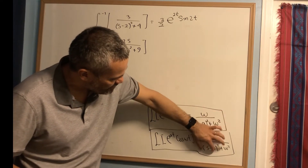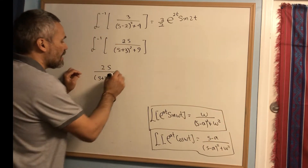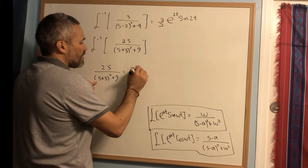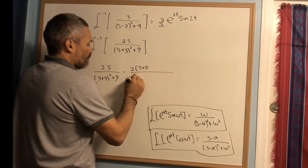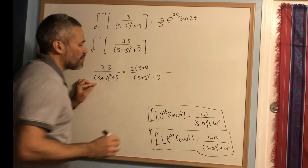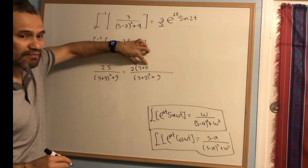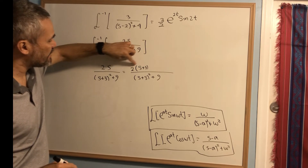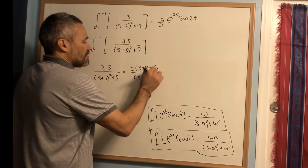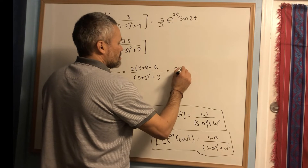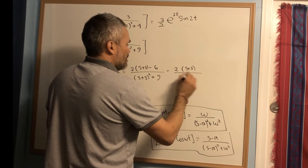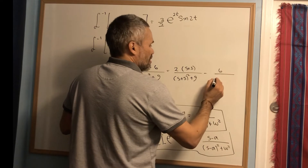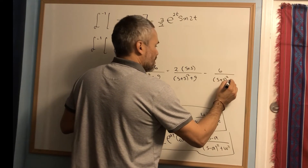To handle the numerator, I rewrite 2s as 2(s+3) minus 6. So the expression becomes 2(s+3) over (s+3)(s²+9) minus 6 over (s+3)(s²+9). The first part already matches the cosine formula. For the second part, I need a 3 on top, so I write 6 as 2 times 3.